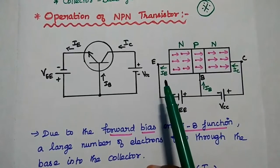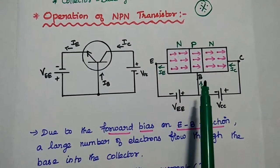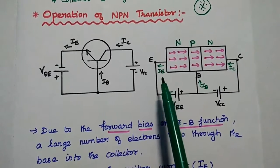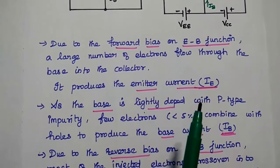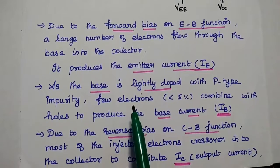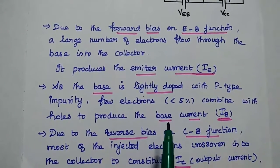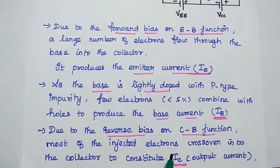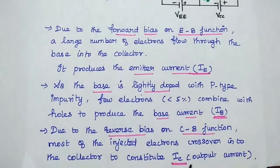This is the direction of conventional current. Conventional current direction is simply opposite to the electron flow. That is why we represent the current direction towards this terminal. Here IE is emitter current, IB is base current, and IC is collector current. Due to the forward bias on emitter-base junction, a large number of electrons flow through the base into the collector, producing emitter current. As the base is slightly doped with P-type impurity, only few electrons combine with the holes to produce base current.